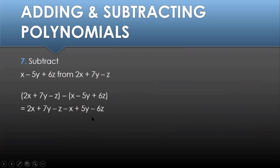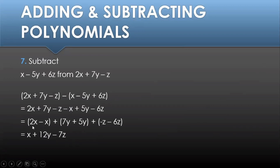Now we combine the like terms: 2x minus x gives x; 7y plus 5y gives positive 12y; and negative z minus 6z is like negative 1 minus 6, giving negative 7z. So the final answer is x plus 12y minus 7z.